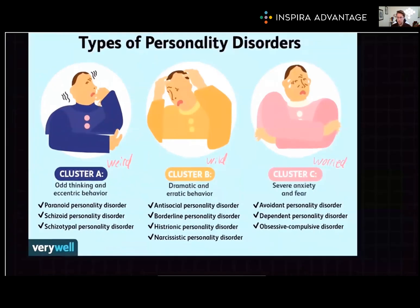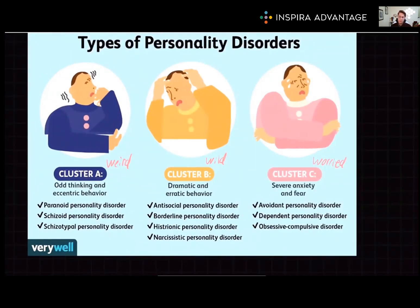We also have the three clusters of personality disorders. These involve inflexible, maladaptive behavioral patterns that cause distress or impaired functioning. Cluster A, the weird cluster, includes paranoid, schizotypal, and schizoid disorders. Cluster B, the wild type, includes antisocial, borderline, histrionic, and narcissistic personality disorders. Finally, cluster C, the worried group, includes avoidant personality disorder, dependent personality disorder, and obsessive-compulsive personality disorder.